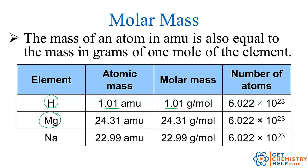So a single magnesium atom would weigh 24.31 atomic mass units but Avogadro's number of magnesium atoms or a mole of magnesium atoms weighs 24.31 grams. Same thing for sodium. A single sodium is 22.99 atomic mass units but a mole of sodium is 22.99 grams.